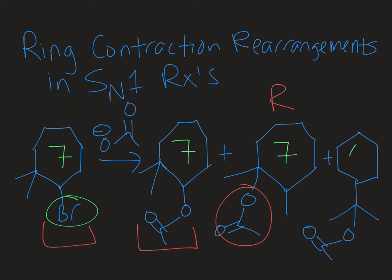However, the last product has only six carbons in the ring, so I've shrunk from a seven to a six-membered ring. This would also be a rearrangement product because it's unexpected. It does not look like the same structure that was in my starting material.